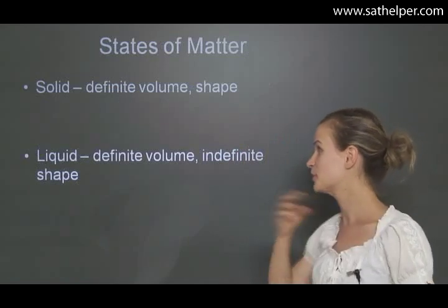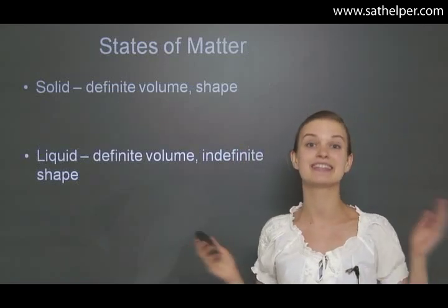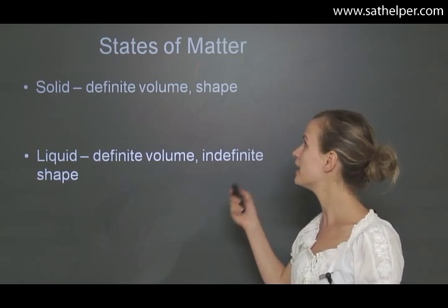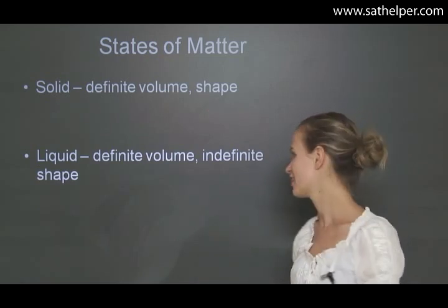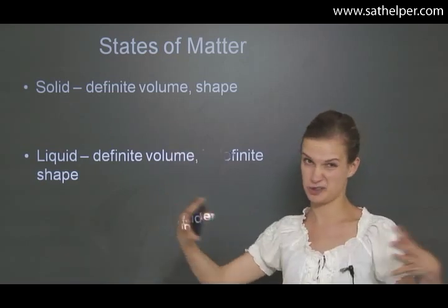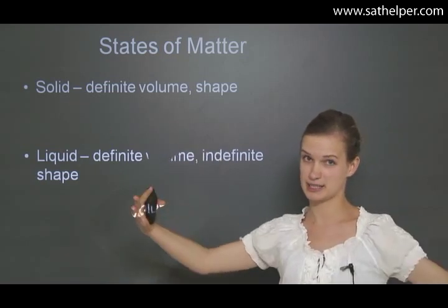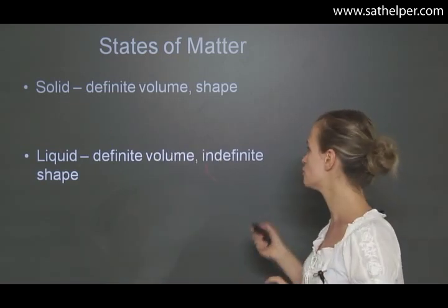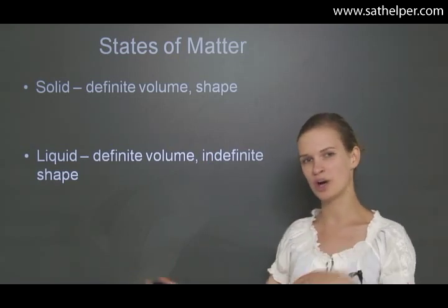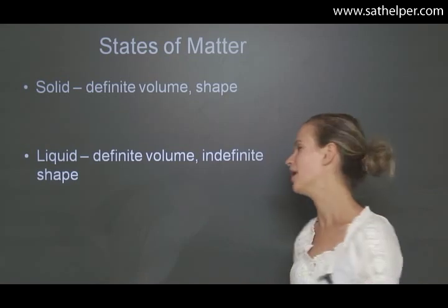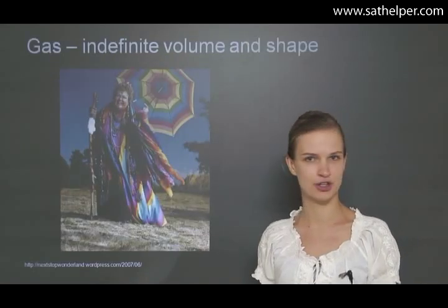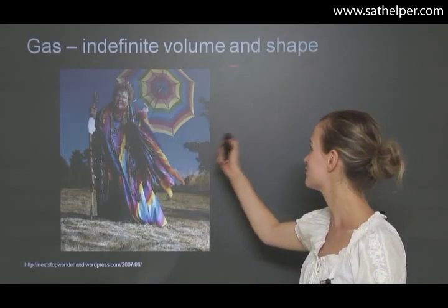States of matter: we have the solid, the liquid, and the gas. The solid has a definite volume and a definite shape. The liquid has a definite volume — liquids cannot easily be expanded or compressed — however, we have an indefinite shape; it can change forms from one vase to another and so on. And gas is a whole different matter — it has an indefinite shape.